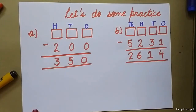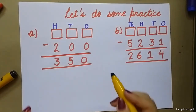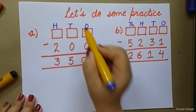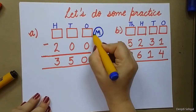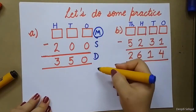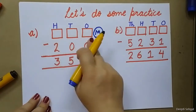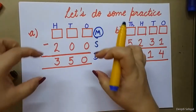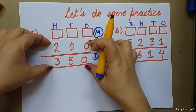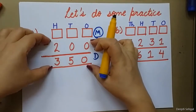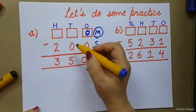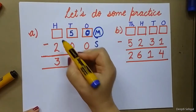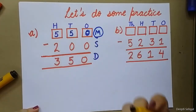Now let's start the practice. The first question — tell me, you have to find minuend or subtrahend here? M, S, D — so this is my minuend. Remember MS Dhoni! So minuend is always the bigger number on top, which means I will add the two smaller numbers. 0 added to 0 is 0, 0 added to 5 is 5, and 2 added to 3 is 5. So 550 is my minuend. Simple, so easy.